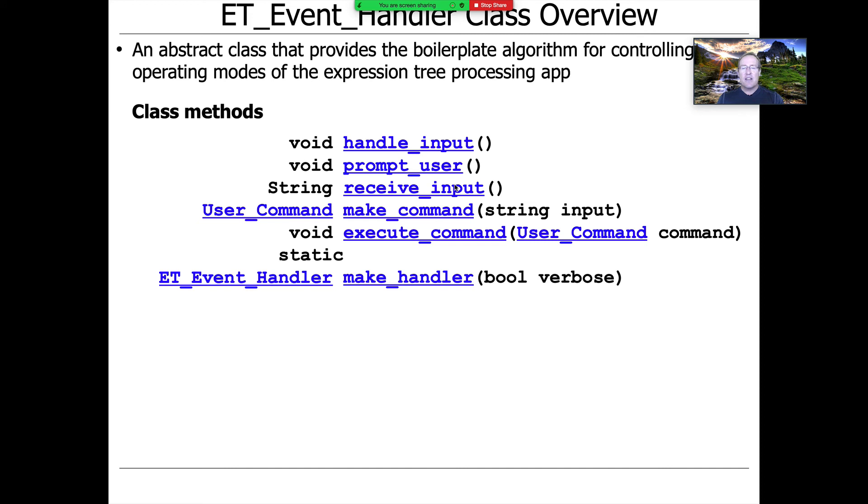So what does the ET event handler class look like? It's basically an abstract class or abstract base class that provides the boilerplate algorithm for controlling the operating modes in our expression tree processing app. It's got the template method called handle input, which gets dispatched when input shows up from the user. We have these four hook methods: prompt the user, receive the input, make the command, execute the command. And we have the make handler method, which is a factory method that either makes a succinct mode ET event handler or a verbose mode ET event handler.